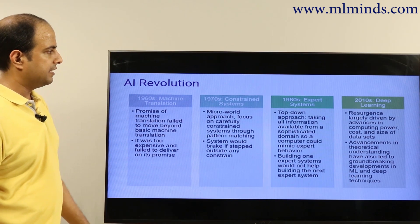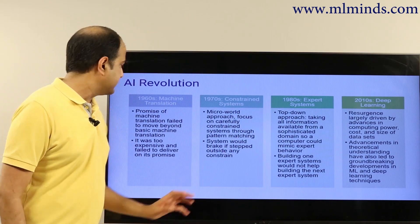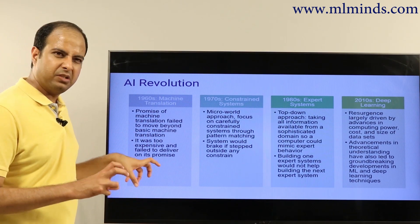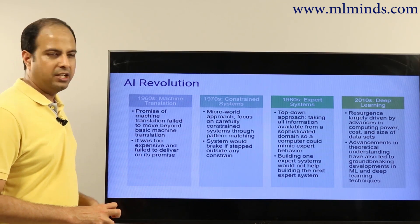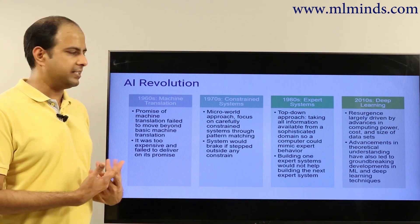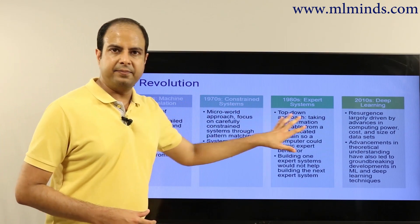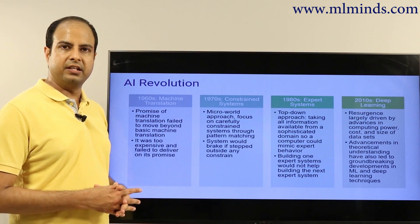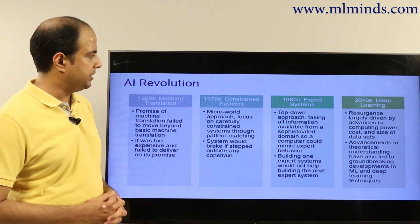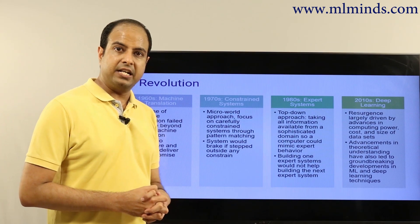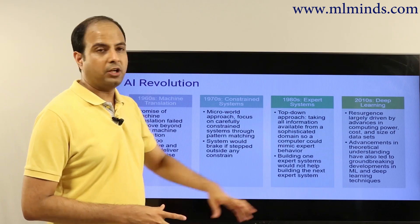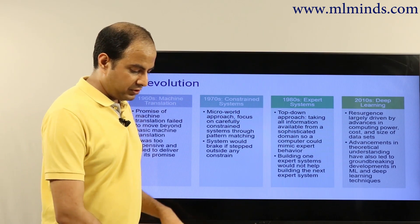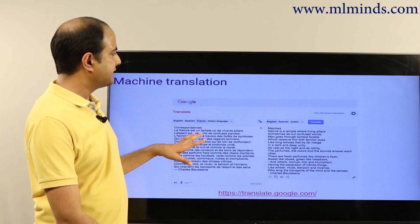The machine learning revolution has come in stages. Work on machine translation already started in the 1960s, but it failed to move beyond basic translation — it was too expensive and there wasn't enough labeled data. Over time the field has grown and evolved, and in the 2010s a specific part of machine learning known as deep learning has blossomed thanks to new compute power and the availability of large datasets. Deep learning has been successful in a variety of areas.